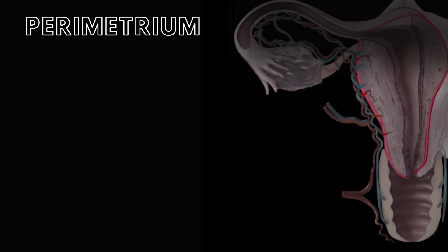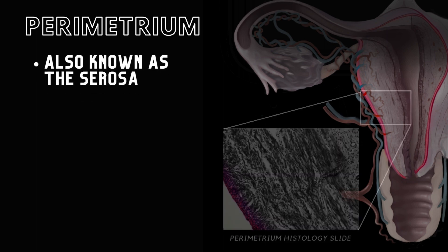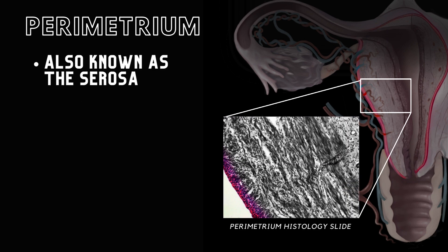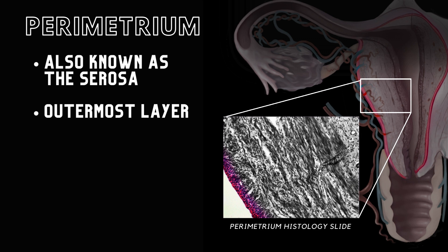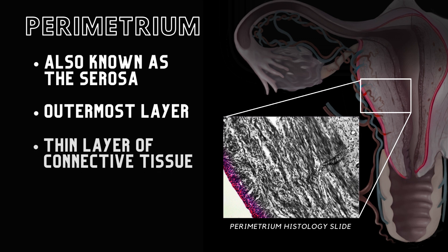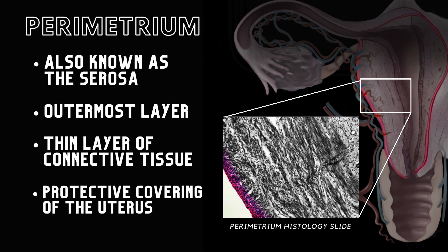The wall of the uterus is comprised of three layers. The parametrium, or the serosa, is the outermost layer of the uterus and is composed of a thin layer of connective tissue. It functions as a protective covering of the uterus.